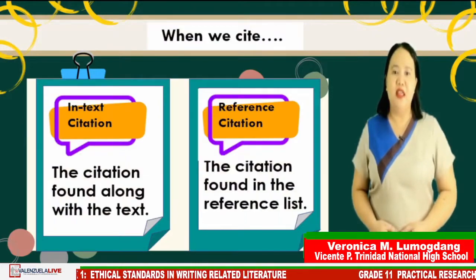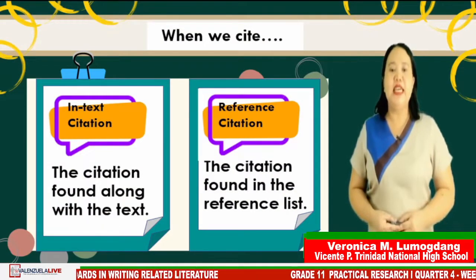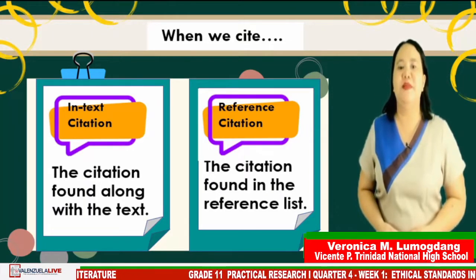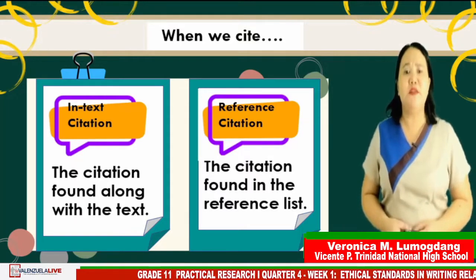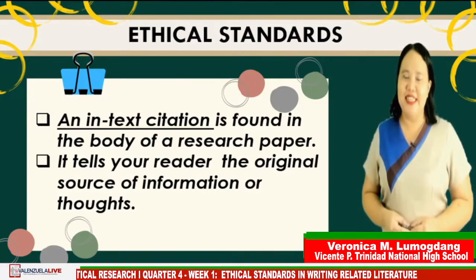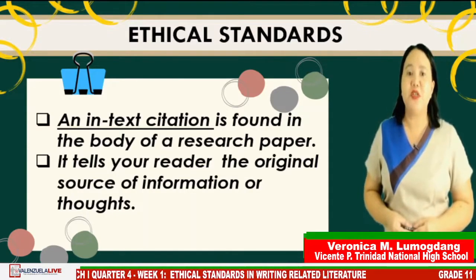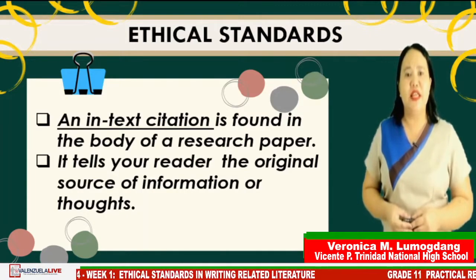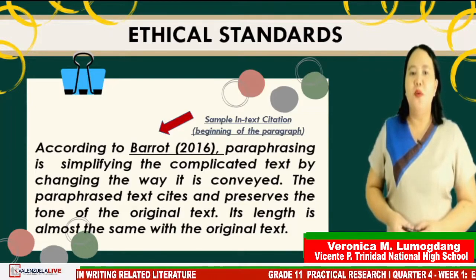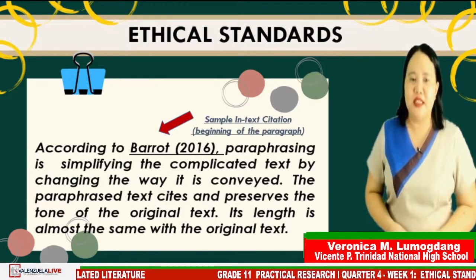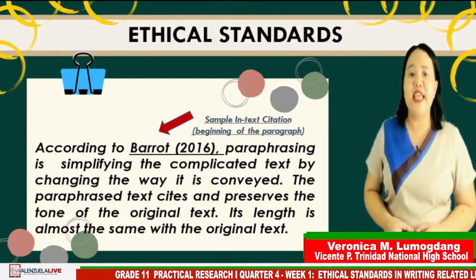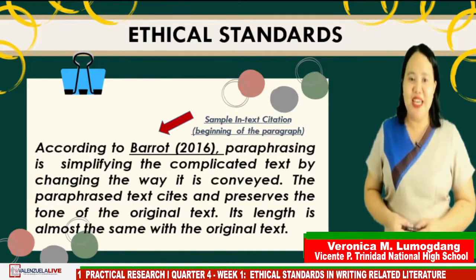When we cite, we use in-text and reference citation. In-text is the citation that can be found at the beginning or at the end of the text. It is called in-text because it is found together with the text or the paraphrased ideas. An in-text citation is found in the body of the research paper. It tells your reader the original sources of information or thoughts. Here is our example. Where do you think you can find the in-text citation or the original source of information? Is it at the beginning or at the end of the paragraph or text? Please write your answer in the comment section.